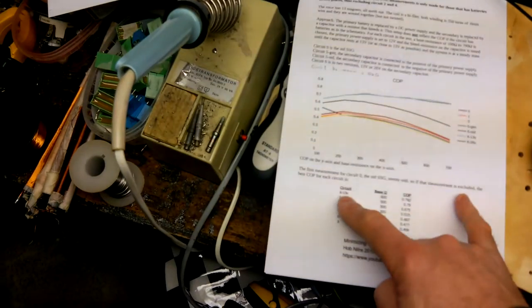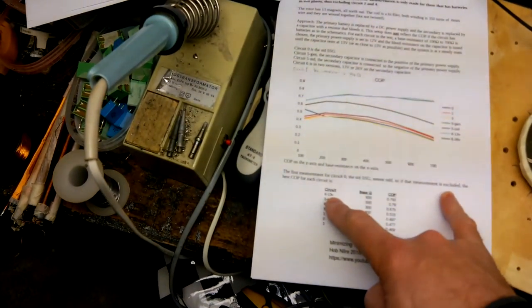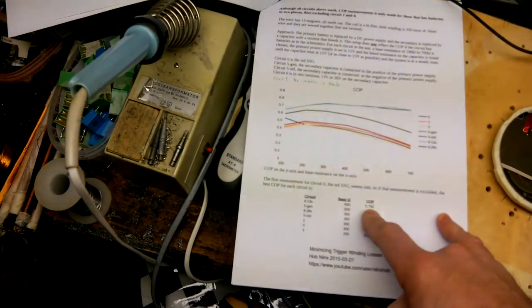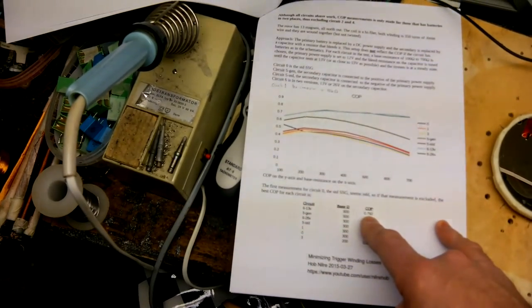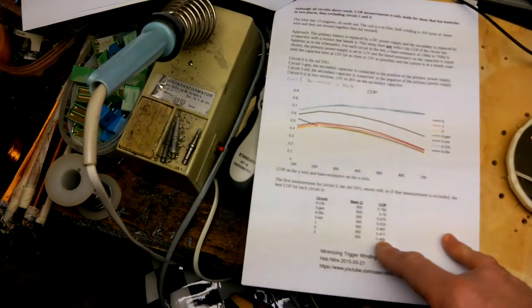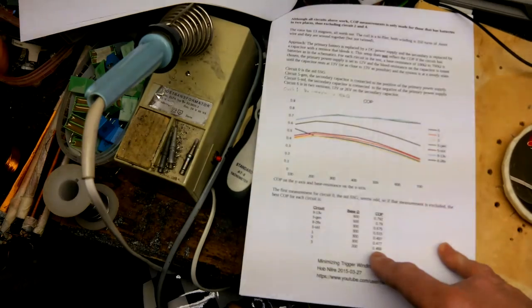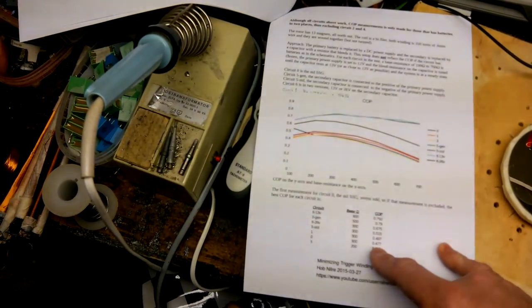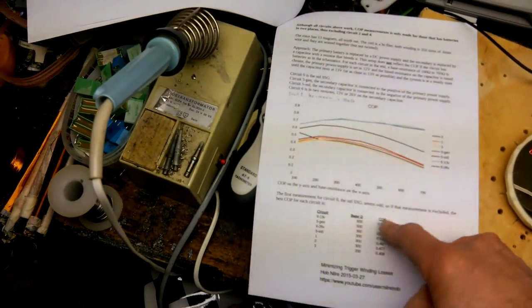The best one is number six, the last circuit with 13 volts from the secondary, which has a COP of just about 0.79. And the worst one, circuit number three, did 0.46 or 47, and the standard SSG did 0.47, so it's a lot better this one up here.